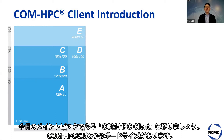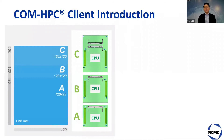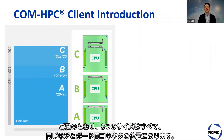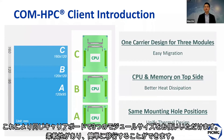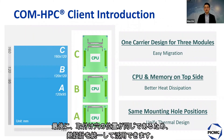ComHPC has five sizes, but ComHPC client only uses three of them. All three sizes share the same screw locations and portable connector positions, so with one carrier design you can use three different kinds of modules — it's flexible and easy for migration. Second, CPU and memory are defined on the top side, so the heat generated by CPU and memory can be easily and better dissipated.